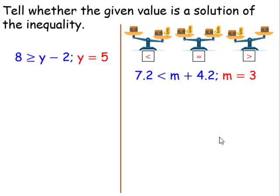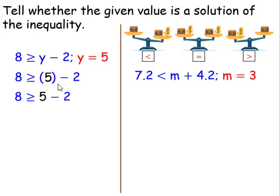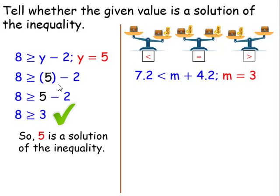In this particular case, we're going to substitute the value for y, n for y. We have 8 is greater than or equal to 5 minus 2. Since we don't have a number in front of the 5, we just have to write 5 minus 2. We just have to say, what's 5 minus 2? Well, it's 3, and 8 is greater than or equal to 3. So therefore, 5 is a solution of the inequality.